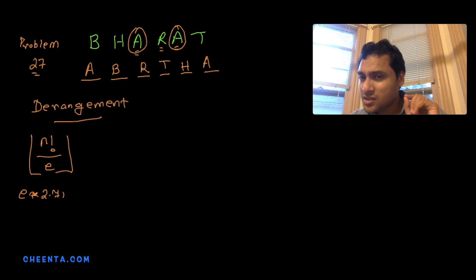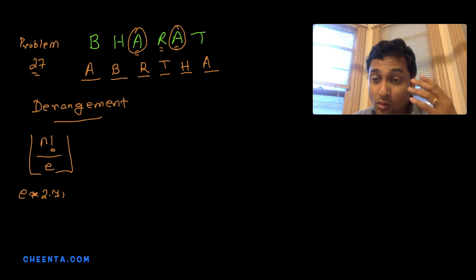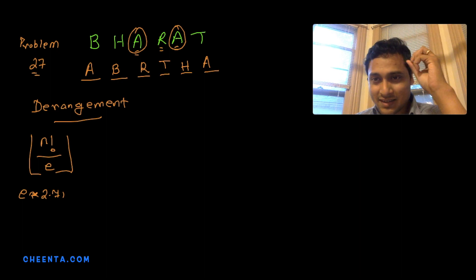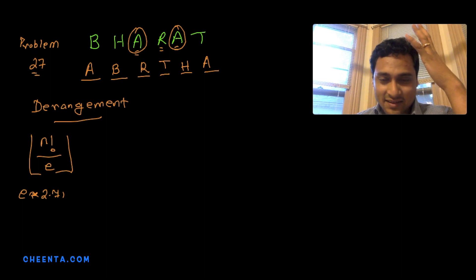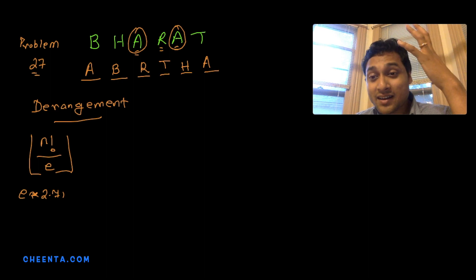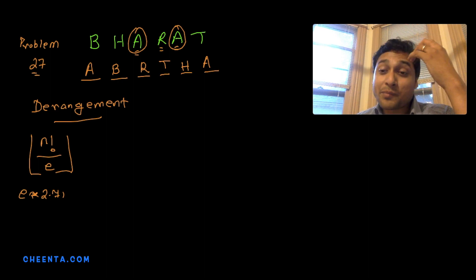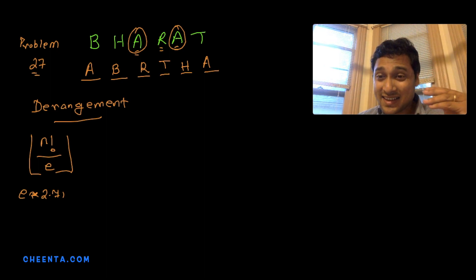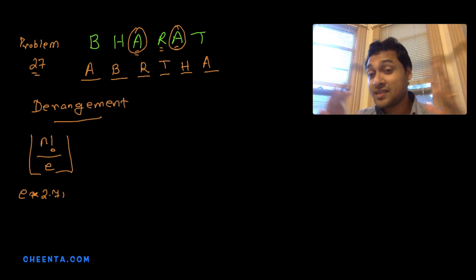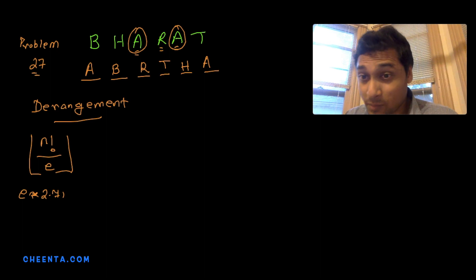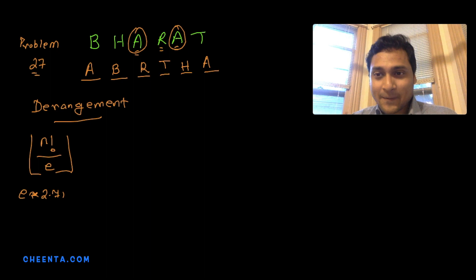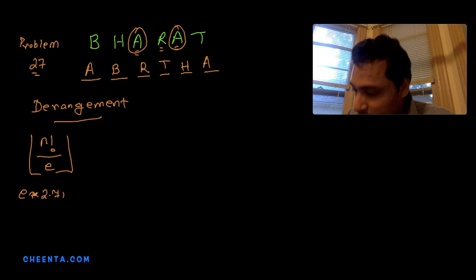We will not use the derangement formula or the inclusion-exclusion principle directly. Instead, we will use a simple brute-force combinatorial technique. This works only because BHARAT is a small word — for a larger word, inclusion-exclusion would be necessary.